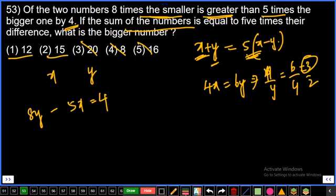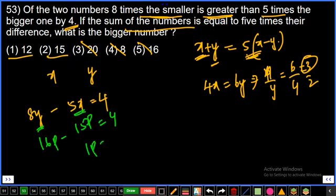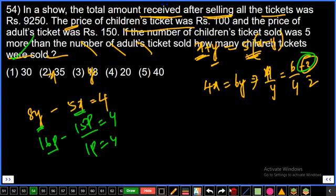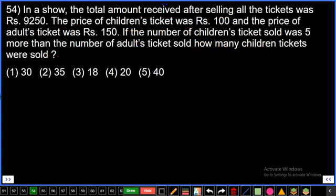With x = 3 parts and y = 2 parts: check 8y − 5x = 4. Eight into 2 = 16 parts, five into 3 = 15 parts, difference = 1 part = 4. So one part value is 4. x = 3 parts × 4 = 12. First option, final answer. Question number 54.